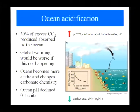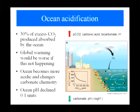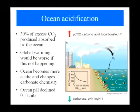Around 30% of the excess CO2 produced since the start of the industrial age has already been absorbed by the ocean. Global warming would be an awful lot worse if this wasn't happening. But it does come at a consequence: the ocean is becoming more acidic, and the carbonate chemistry is changing and will continue to change. It's estimated that ocean pH has declined by 0.1 of a unit since the start of the industrial age.